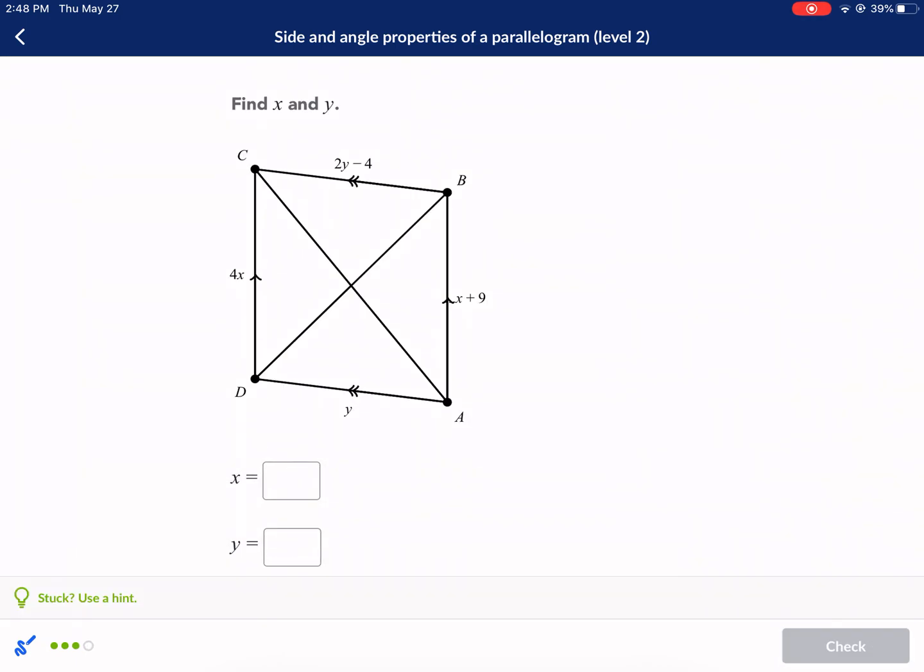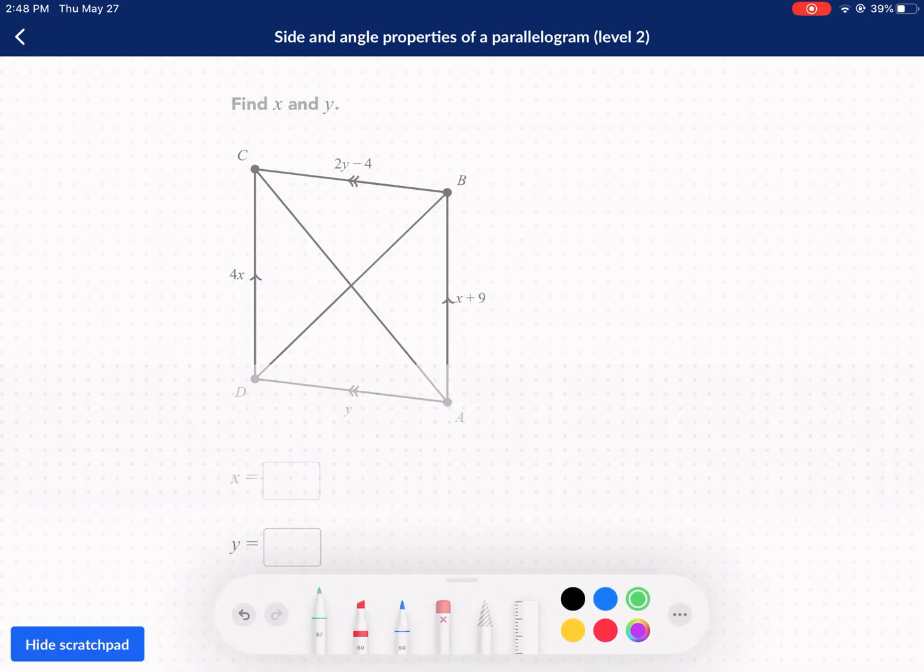Okay. This one looks complicated. It's not too bad. Find x and y. I'm not going to do that same joke I just did. Okay. So what do we do here? We know that these two sides, opposite sides, are equal. They're congruent. 4x equals x plus 9. Okay. And we also know that these two sides are going to be equal. So that means 2y minus 4 equals y. So we can just solve these two equations.